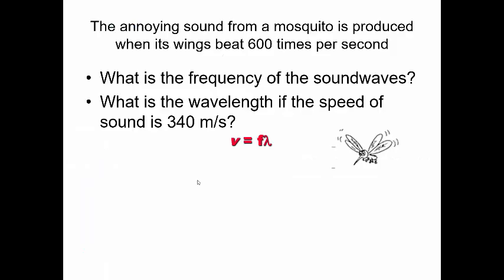Say we have an annoying sound — a mosquito buzzing. Female mosquitoes make the annoying sound, and their wings are beating at 600 times per second. The first thing we want to calculate is the frequency of the sound waves. Frequency is the number of cycles per second, and we're given that directly: 600 cycles per second, or 600 Hz.